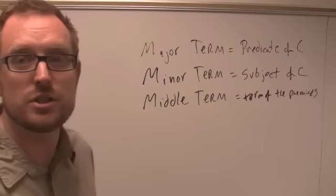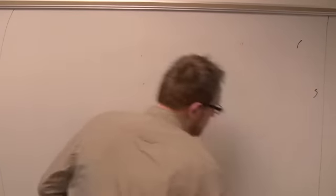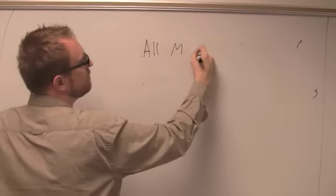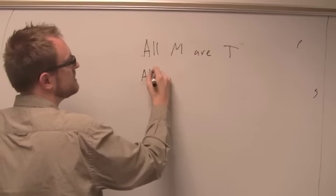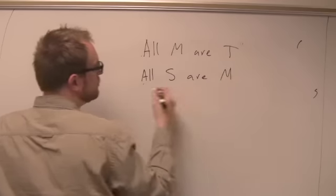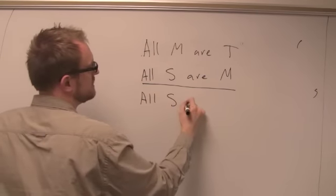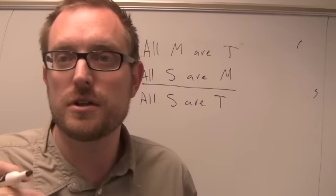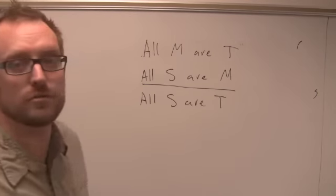Here's a simple example to make sense of this: 'All men are mortal. All persons named Socrates are men. Therefore, all persons named Socrates are mortal.' Or in other words: 'All men are mortal. Socrates is a man. Therefore, Socrates is mortal.' This is in categorical form.